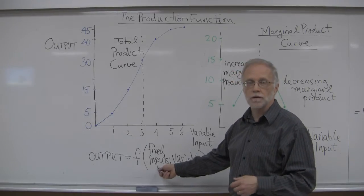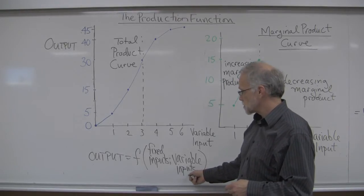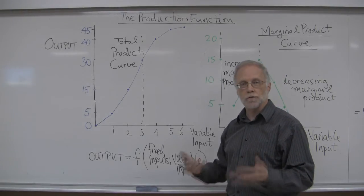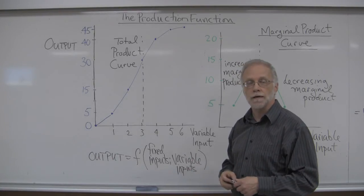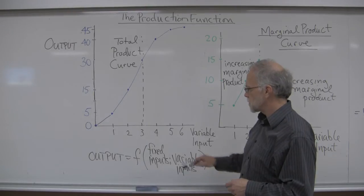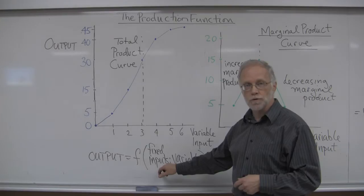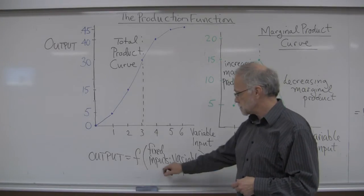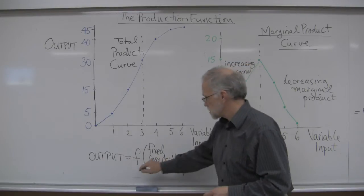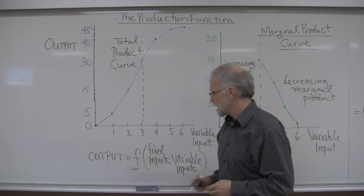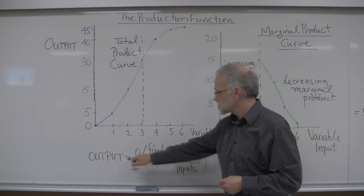Fixed inputs might be something like a given amount of land, and some variable inputs — maybe some machinery, some equipment, some time that people spend cultivating a field. What we could ask is: what's the relationship between the inputs that we're using in various quantities and the output that we're getting? That's just what this production function F is telling us.